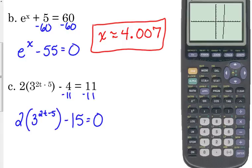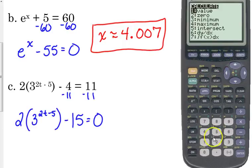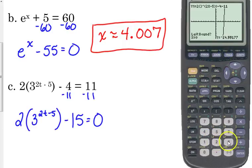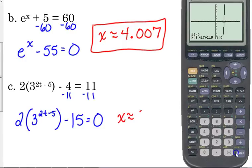Okay? It's between 3 and 4. Second trace. In the other case, 0 is option number 2. Left bound is 3. Right bound is 4. This answer is approximately 3.417.